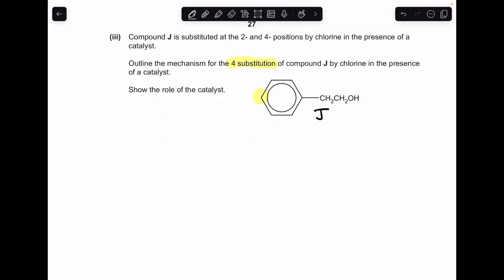Moving on to the mechanism now, I've just got compound J's structure there and we're told to do the mechanism for substitution with chlorine at the four position. The first part of the mechanism is using the catalyst. I've gone for AlCl3 as my catalyst, you could have gone for FeCl3 there. Chlorine reacts with the AlCl3 and you get the Cl+ electrophile and AlCl4-. If you'd gone for iron chloride you would have got FeCl4- there.